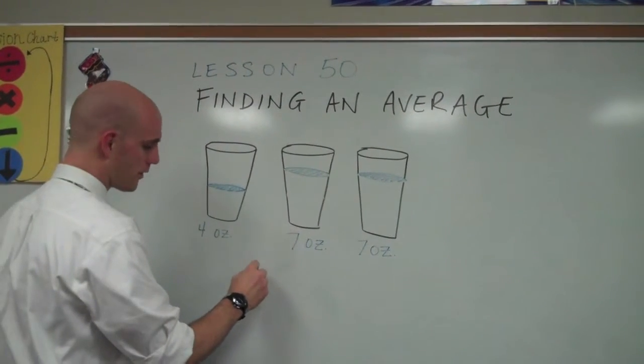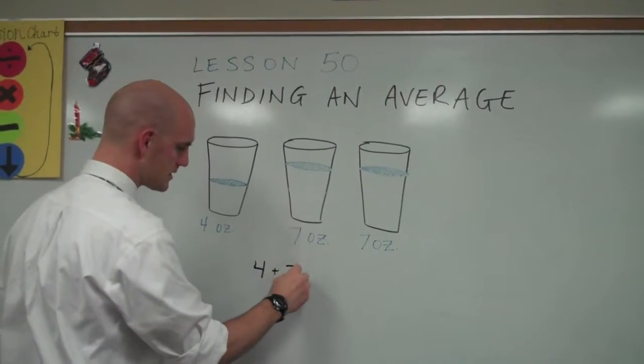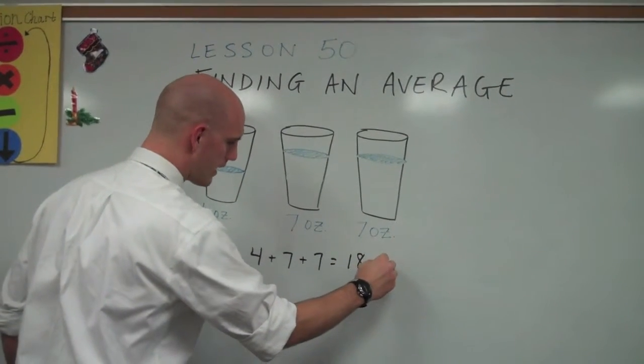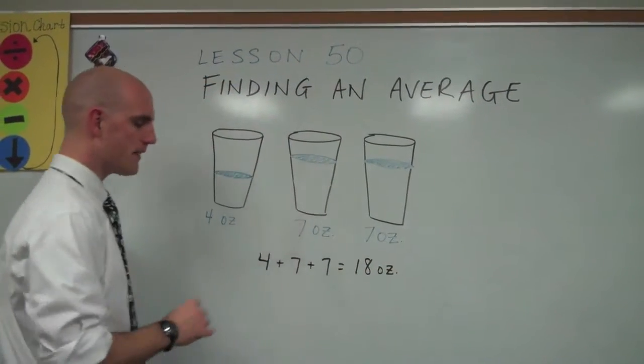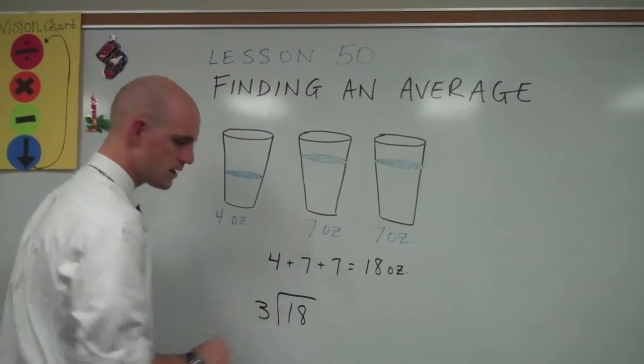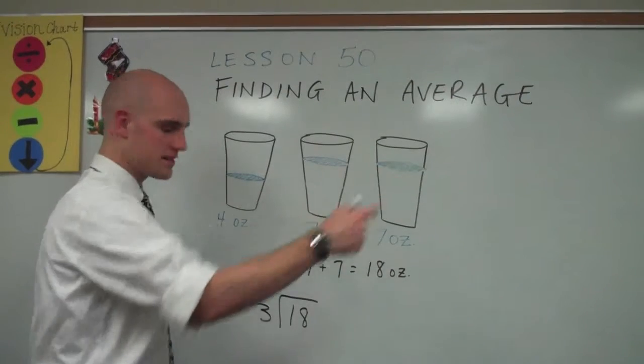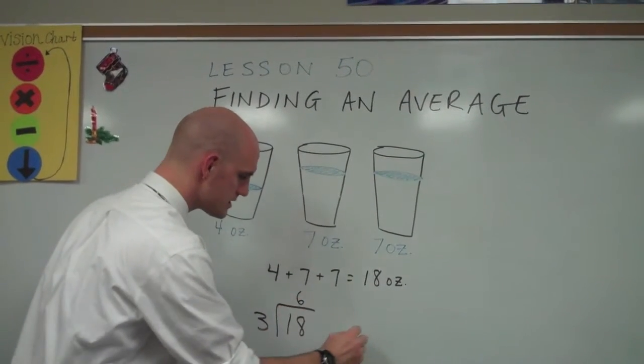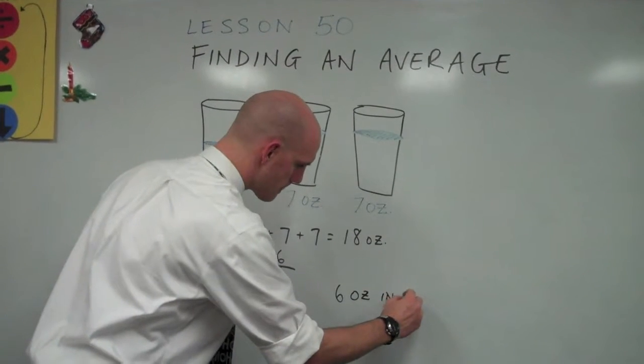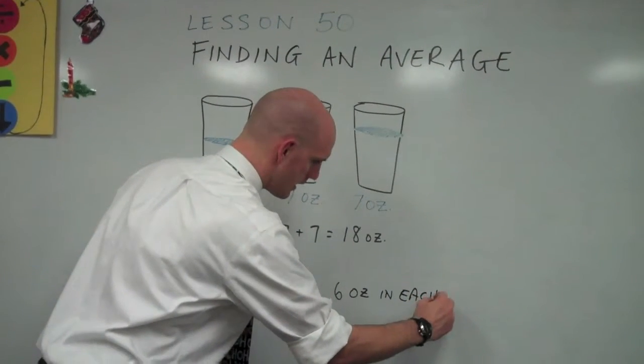So when I find the total, or the sum, I have four plus seven plus seven, which is 18 total ounces. If I take that 18 and I divide it into three groups because there's three glasses, I find that there should be six ounces in each glass.